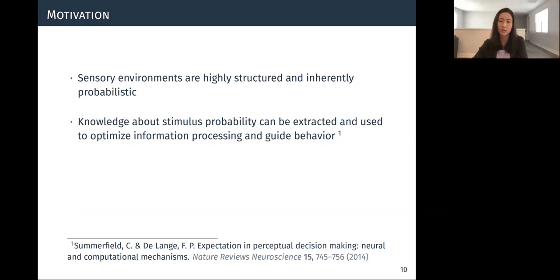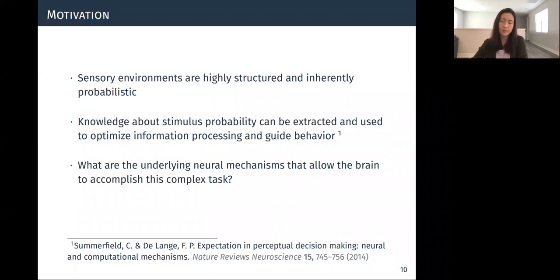So while certain aspects of probabilistic information processing have been investigated through human psychophysics, neuroimaging, and lesion studies, the circuit mechanisms that underlie this complex cognitive function is not well understood. And so to investigate the circuitry that underlies this process, we examine how humans and recurrent neural network or RNN model process and utilize probabilistic information to make decisions.